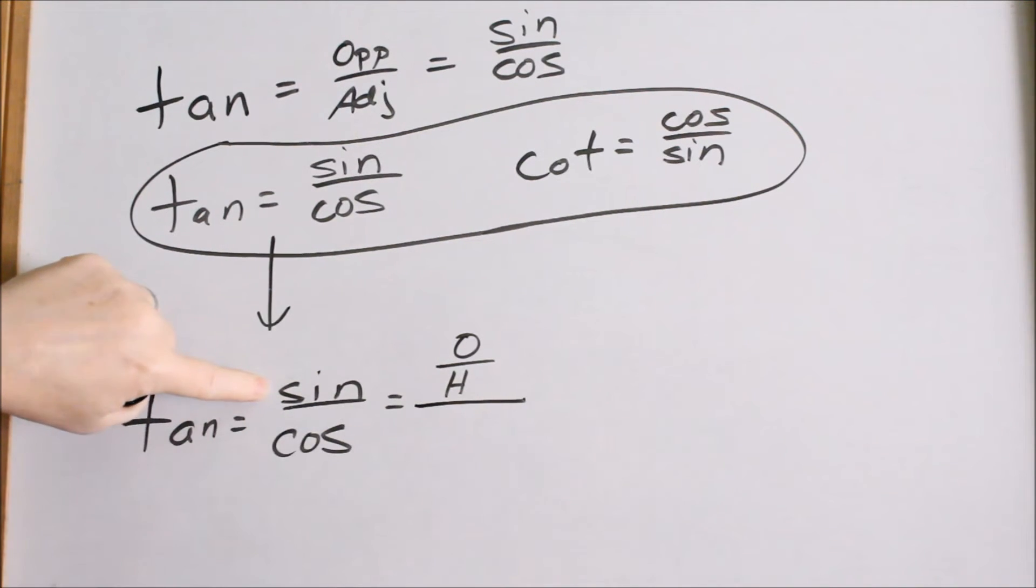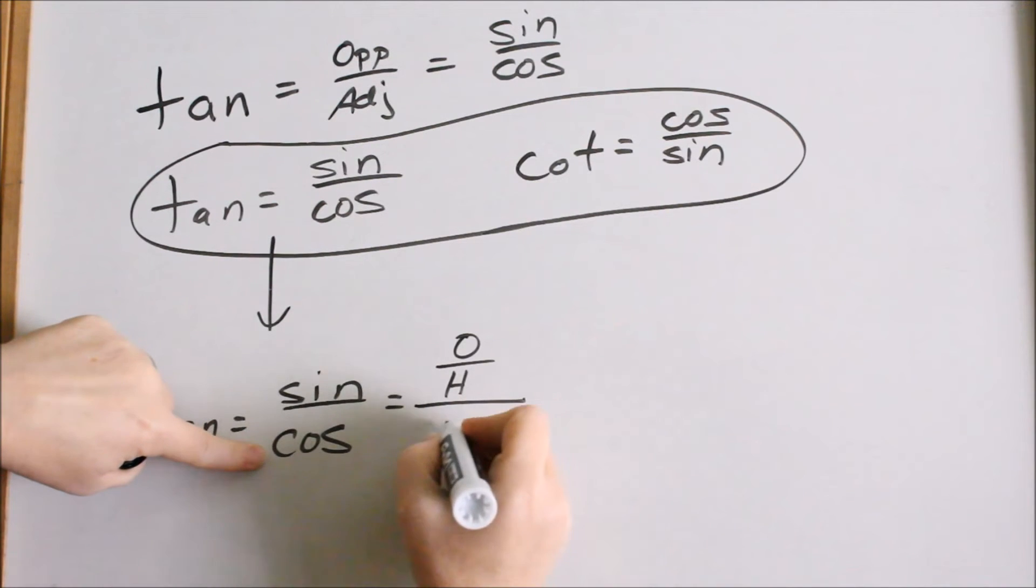Okay, so that's sine. Then, by definition, cosine is what? Cosine is adjacent over hypotenuse.